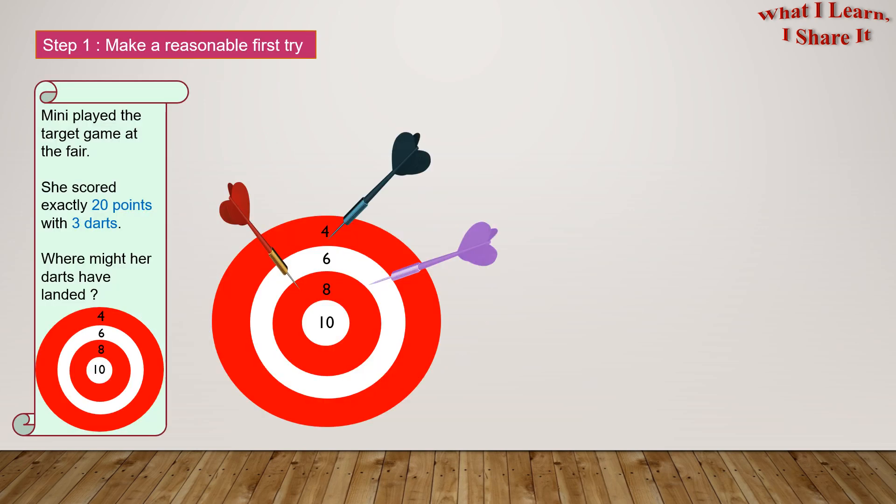Step one, make a reasonable first try. So right now we're assuming that Minnie's darts landed on eight, six, and four.